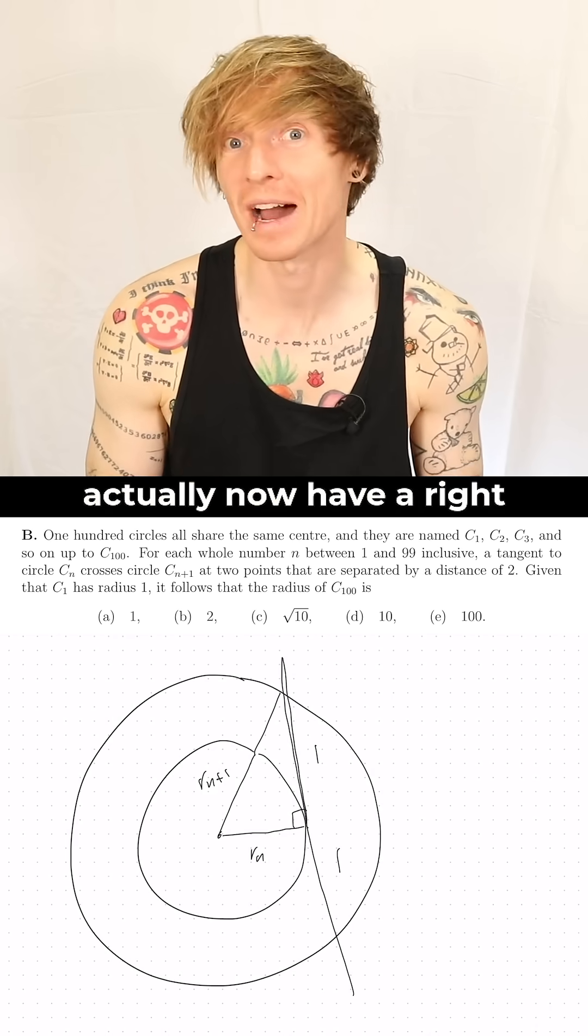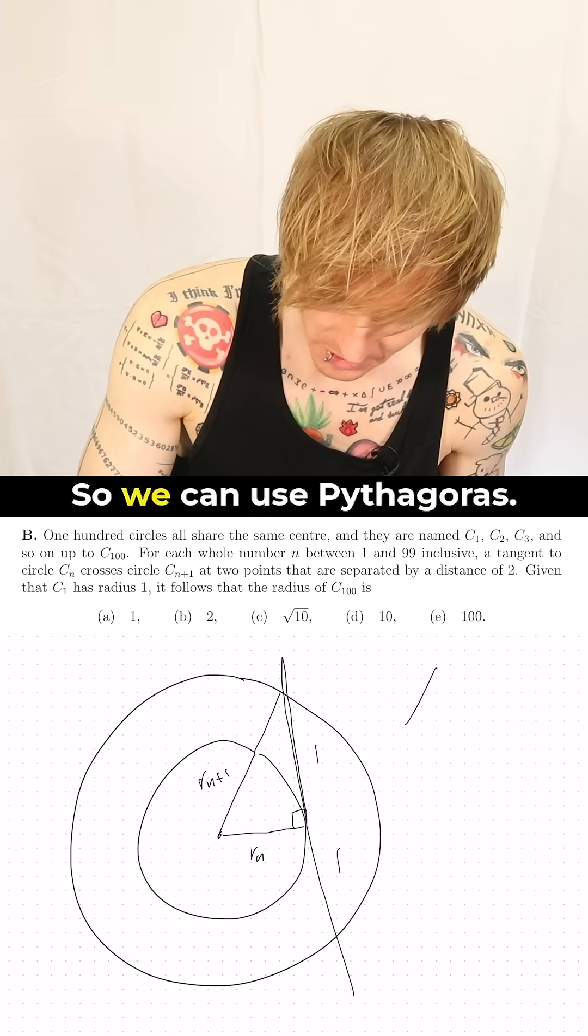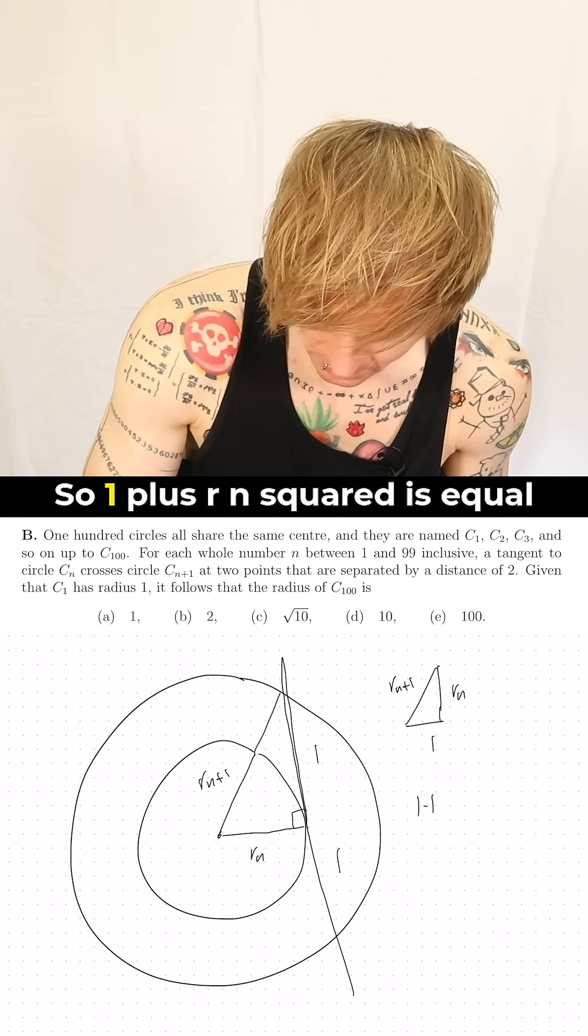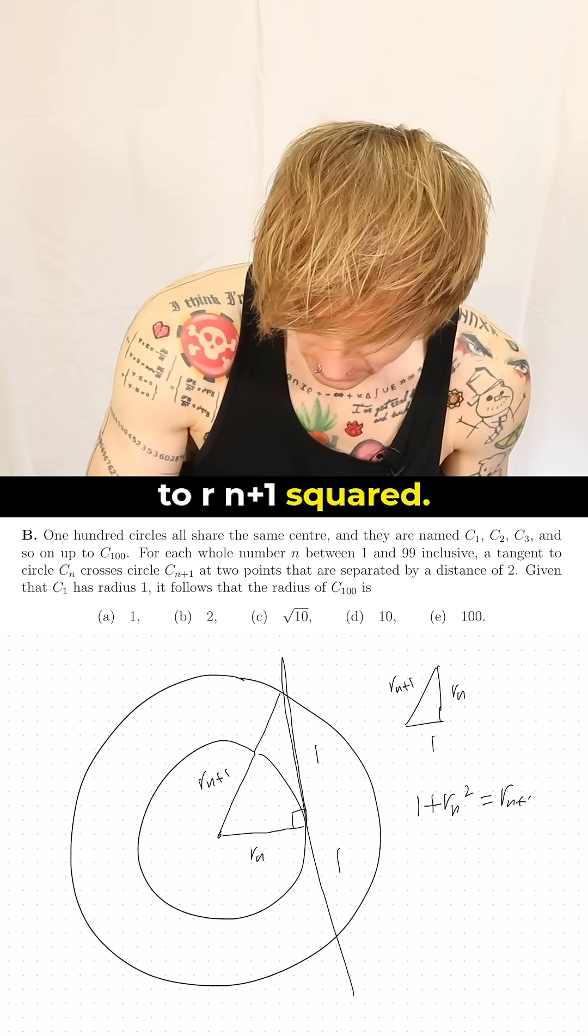So what this all means is we now have a right-angled triangle, so we can use Pythagoras. So 1 + Rn² = R(n+1)².